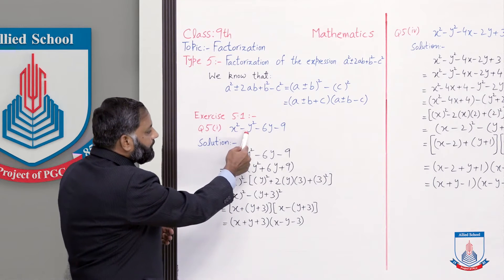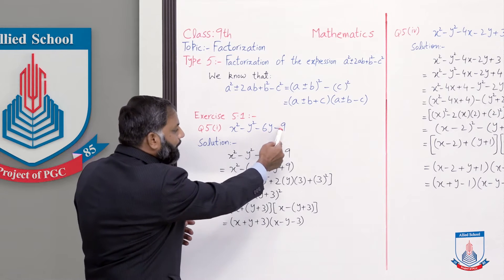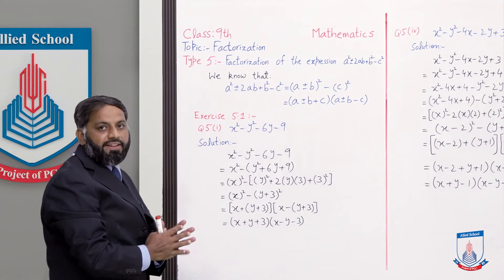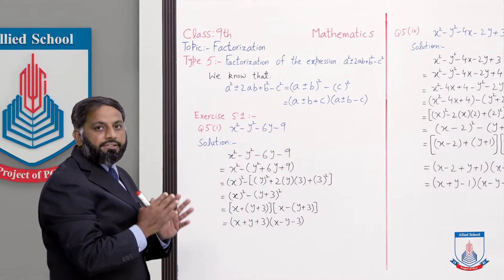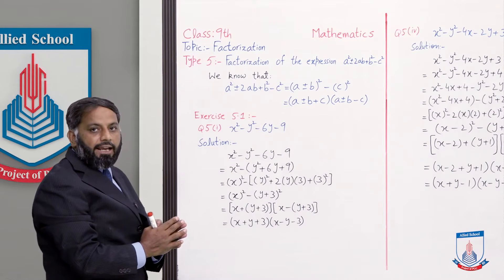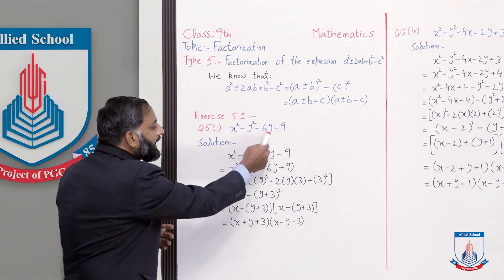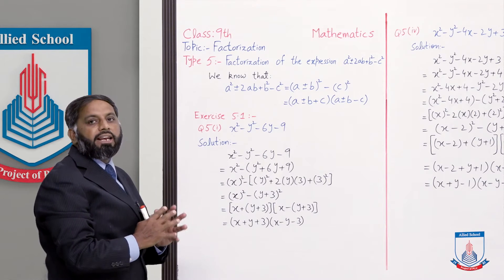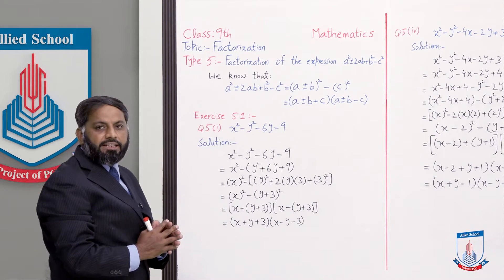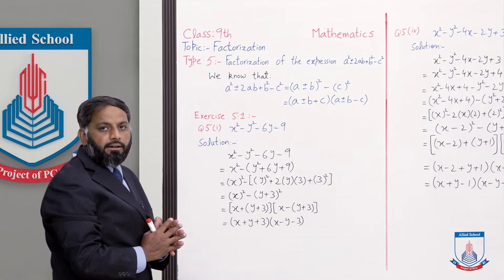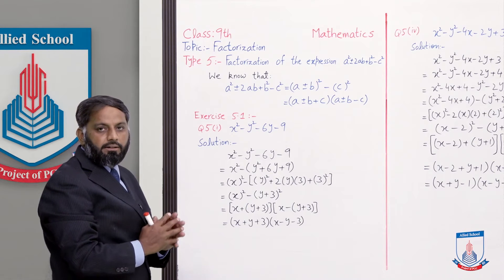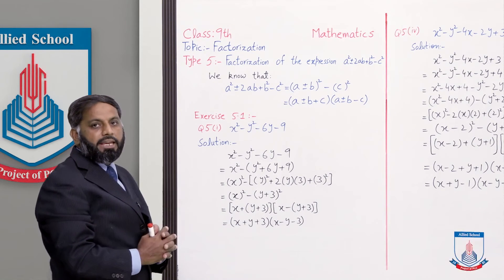Ab isi type ko hum exercise ke question se samajhte hain. Exercise 5.1, question number 5, part 1: x² - y² - 6y - 9. Yah jo expression humein diya gaya hai, is expression mein pehle se pata chal raha hai ke first three terms milke perfect square nahi ban sakti. Jo humne abhi general form discuss ki thi, us mein first three terms ek perfect square ban raha tha minus last term bhi ek perfect square tha.